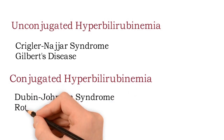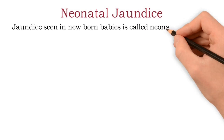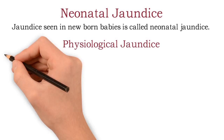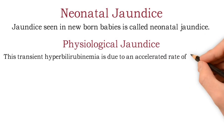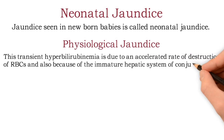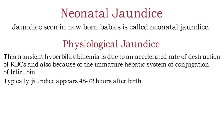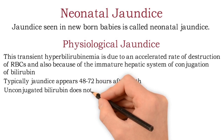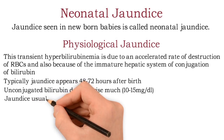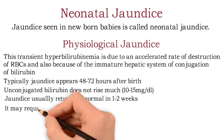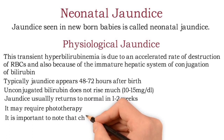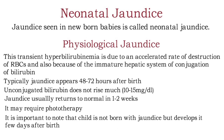After congenital jaundice, we will now see neonatal jaundice — jaundice seen in newborn babies. First, physiological jaundice: this transient hyperbilirubinemia is due to an accelerated rate of destruction of RBCs and because of the immature hepatic conjugation system in newborns. Typically, jaundice appears 48 to 72 hours after birth — note that congenital jaundice appears within 24 hours of birth. Unconjugated bilirubin does not rise much, around 10 to 15 mg per deciliter. Jaundice usually returns to normal in one to two weeks but may require phototherapy. The child is not born with jaundice but develops it a few days after birth.